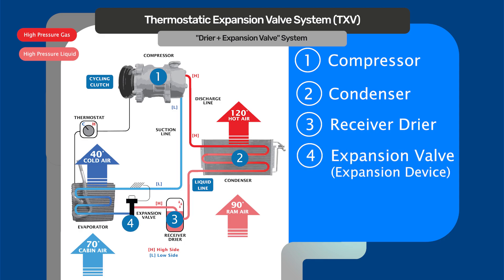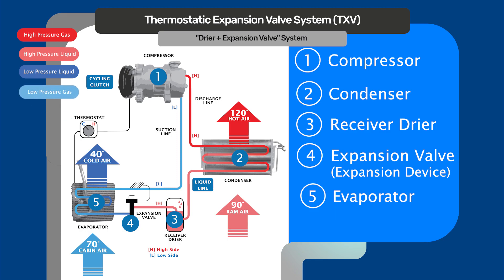Then the refrigerant goes to the expansion valve — a device regulated by temperature. There is a metering device in there that's actually reading the temperature of the incoming and outgoing refrigerant from the evaporator, making the determination to let more or to restrict the refrigerant going into the evaporator. From the evaporator, when it comes out, we're back to a gas and back to the compressor.